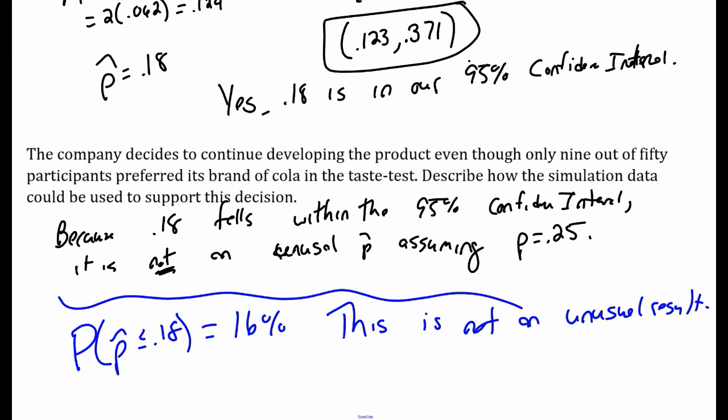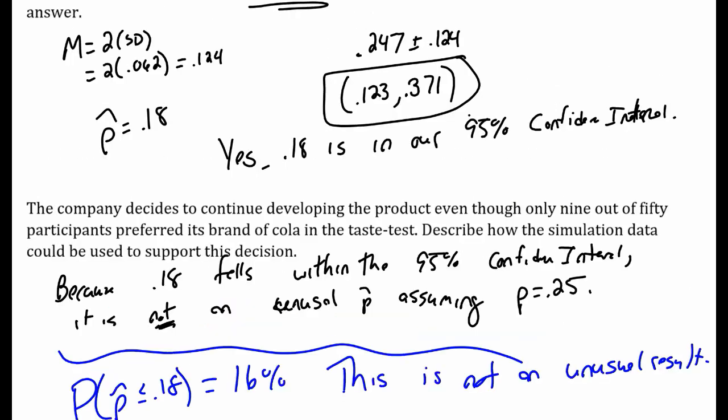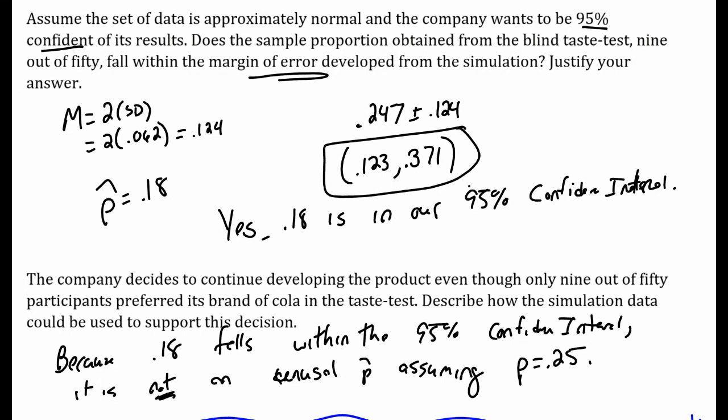Should they still make it? Yes — they could continue because that 18% falls in the confidence interval, and that probability is bigger than 5%. Big idea: margin of error is two times the standard deviation. To get our 95% confidence interval — the interval containing plausible population parameters — it's the mean plus or minus the margin of error, the mean plus or minus two standard deviations.